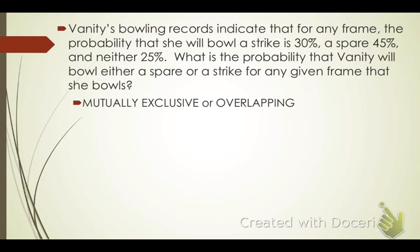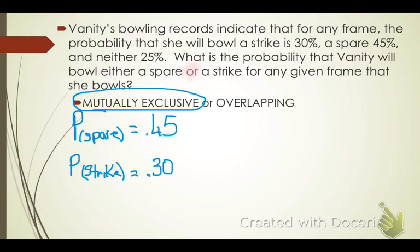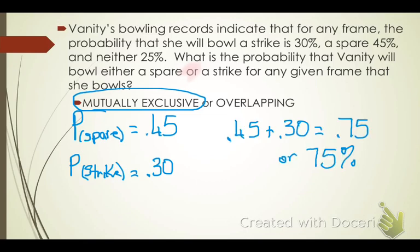Vanity's bowling record indicates that the probability she will bowl a strike is 30%, a spare is 45%, and neither is 25%. The probabilities are already calculated. What is the probability that Vanity will bowl either a spare or a strike? In bowling, those are mutually exclusive events — you either get a spare, a strike, or a number of pins. The probability of a spare is 45% and a strike is 30%. Using the word OR, I add those two and get 0.75 or 75 percent.